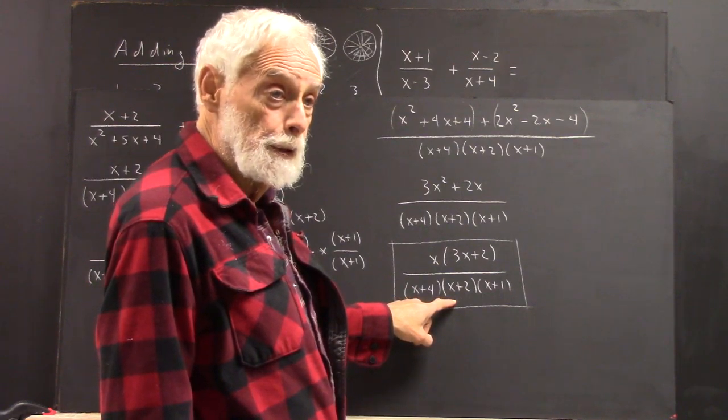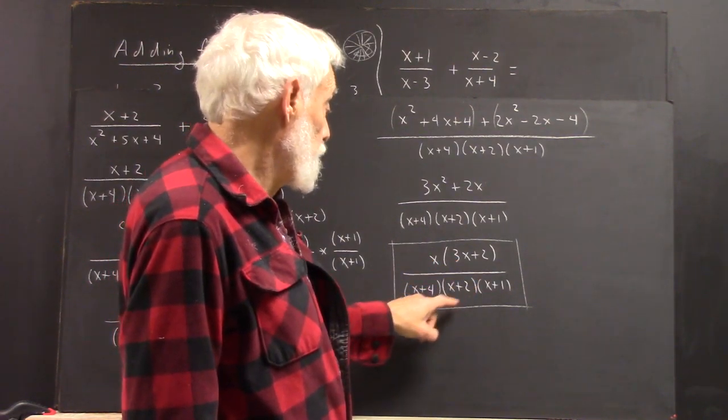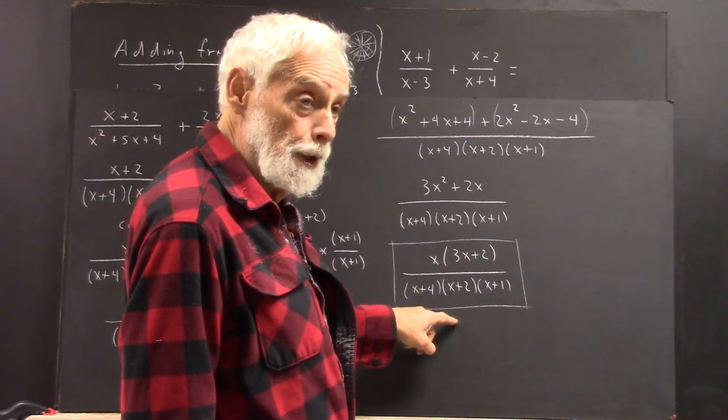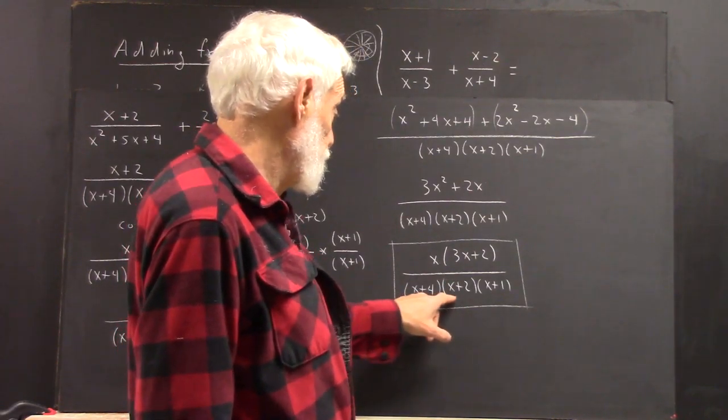So, we add the numerators, get this expression, and we factor this. This factors into x times 3x plus 2.